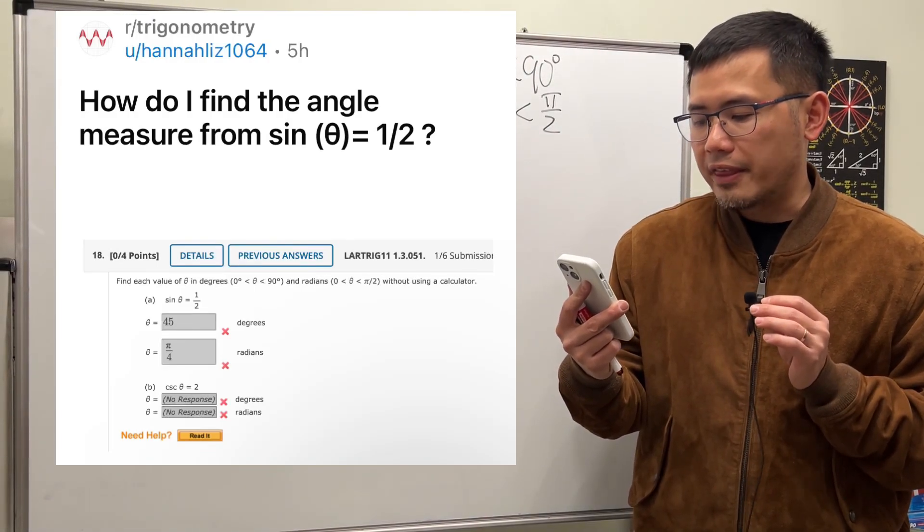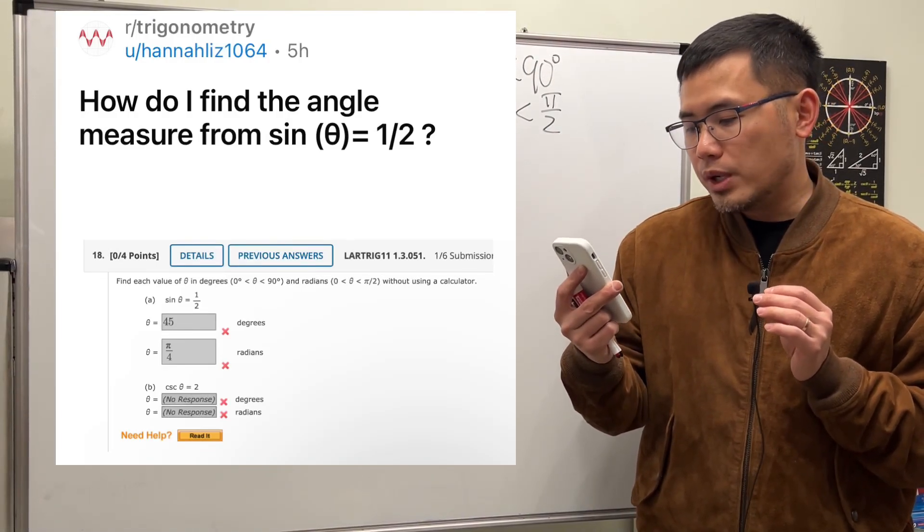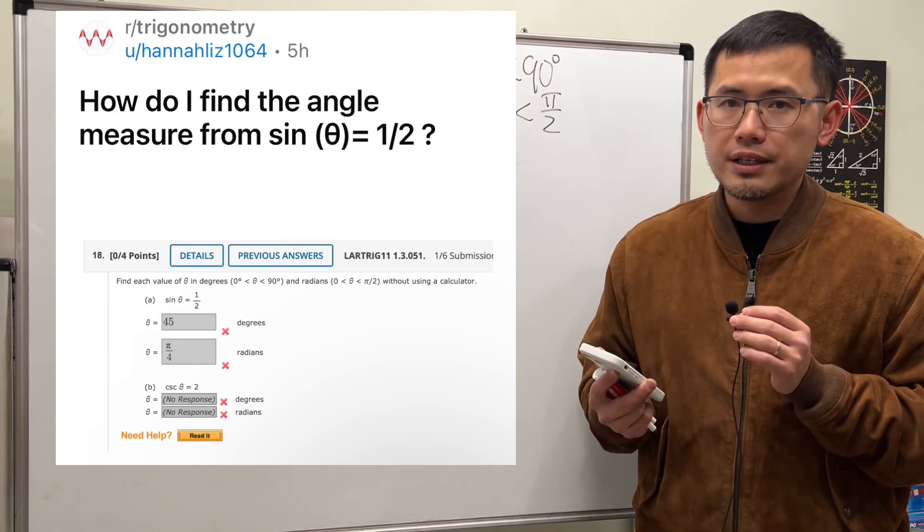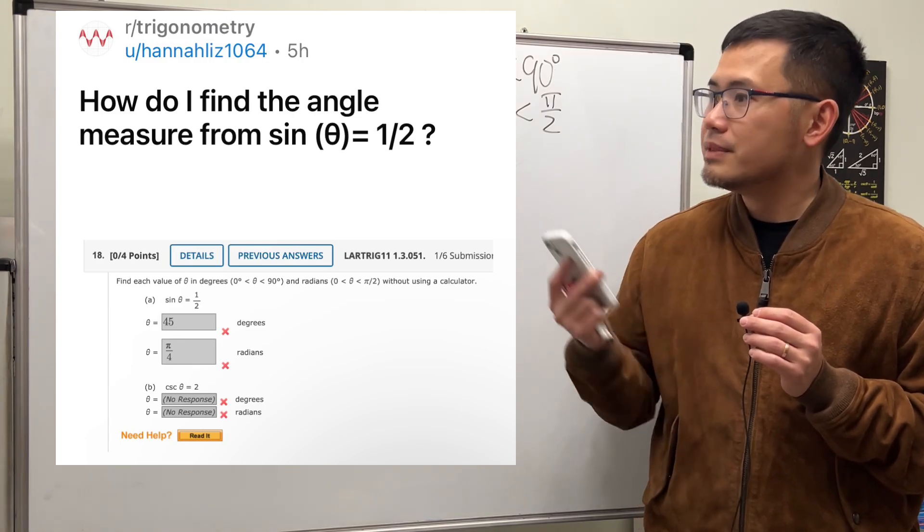How do I find the angle measure from sin theta equals 1 half? We are going to solve this in degrees from 0 to 90 degrees, and also in radians from 0 to pi over 2. So now let's take a look.